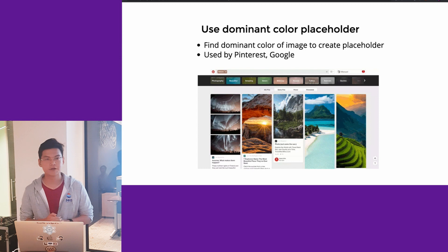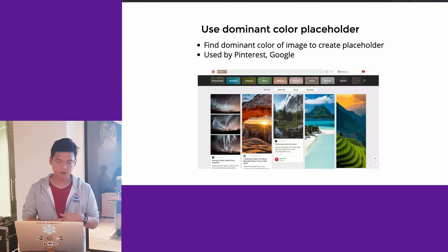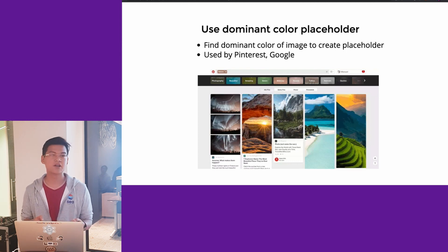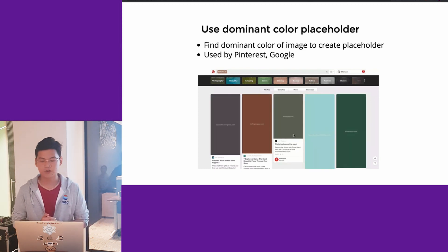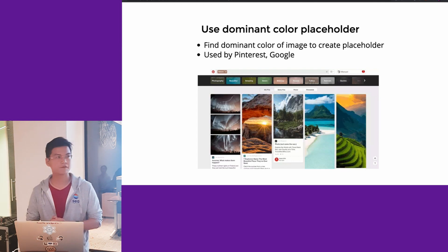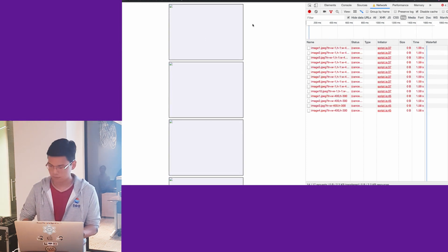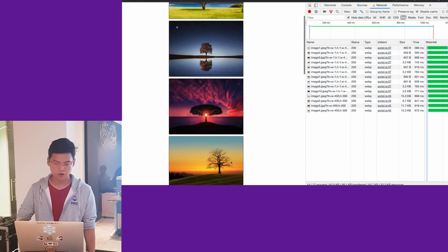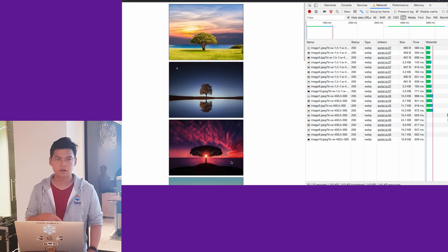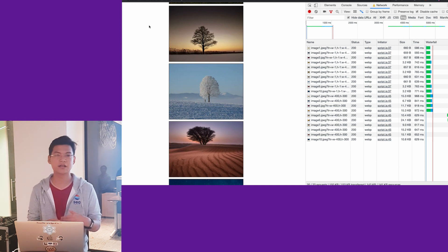The first placeholder technique is to use the dominant color as a placeholder. This requires API support — it processes every image and provides a URL of a very small image showing the dominant color. This technique is used heavily by Pinterest and Google image search to improve their UX. In the demo, when I scroll down I see a different background color as a placeholder, which gives the user the feeling that something is happening.